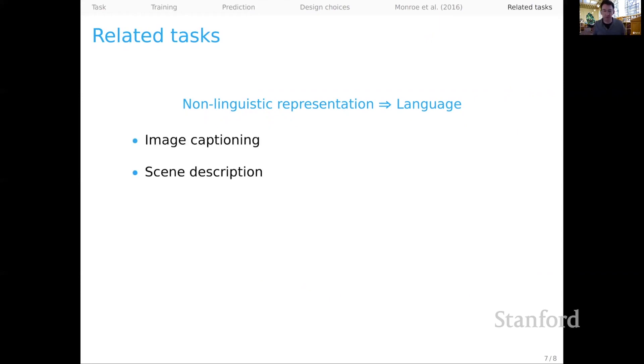Scene description, of course, is another instance. Visual question answering is a slight modification where the input is not just an image, but also a question text. And the idea is that you want to produce an answer to that question relative to the image input.